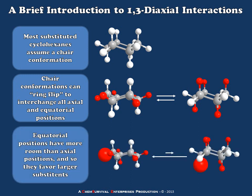Axial and equatorial positions have different degrees of space among the atoms, and so larger groups tend to prefer to be in the equatorial position. Therefore, we can usually model the behavior of cyclohexane molecules as a two-state equilibrium between one chair in which a certain set of substituents is in the equatorial conformation, and one in which they are in the axial conformation. It's their desire for extra space that dictates the equilibrium constant.